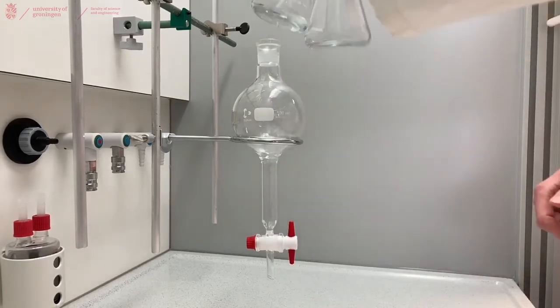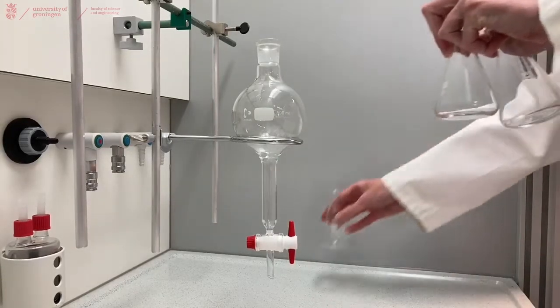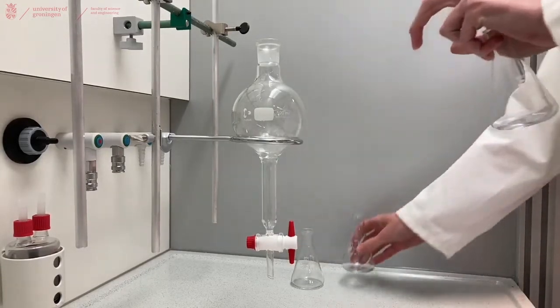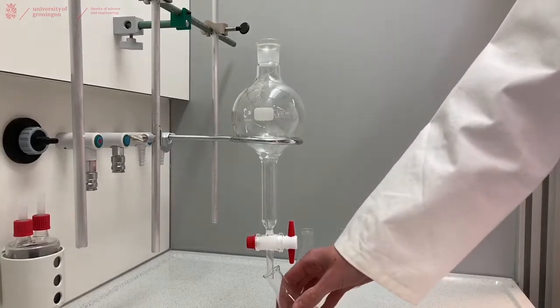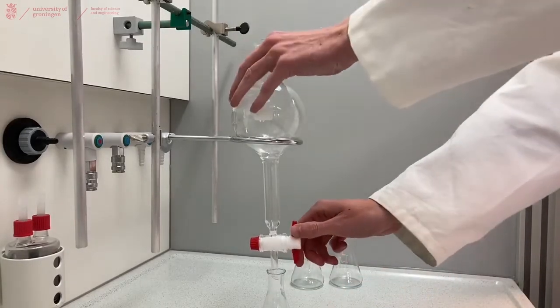You will need several Erlenmeyers to hold all the fractions you intend to collect. Place one of them under your separator funnel and close the tap.